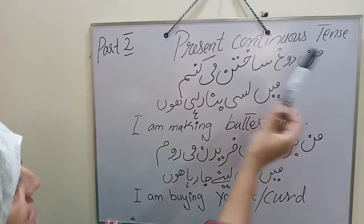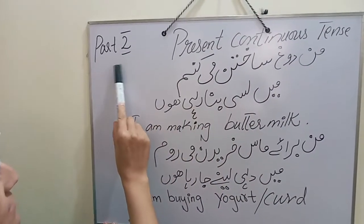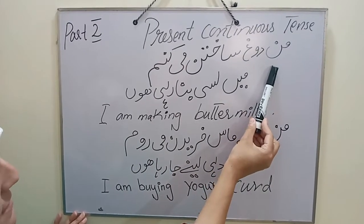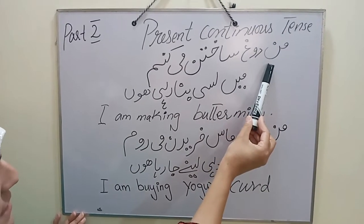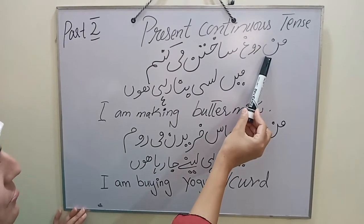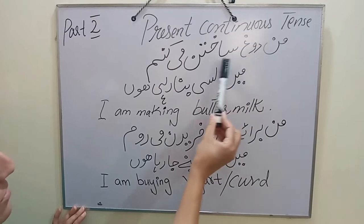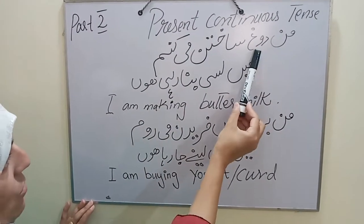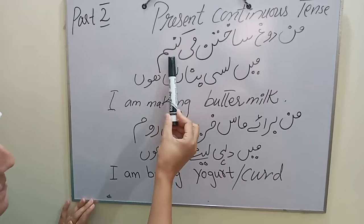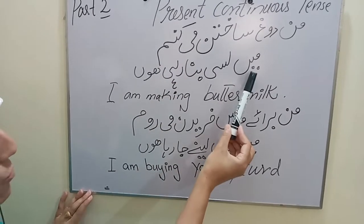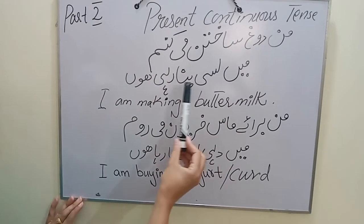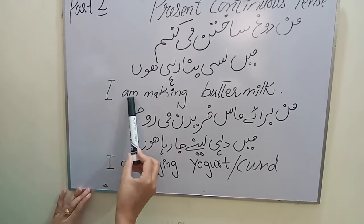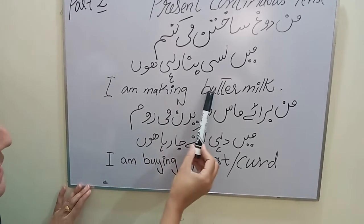Present continuous tense. As I told you, this is part two. First of all, we will see the Farsi sentence. I am making buttermilk.